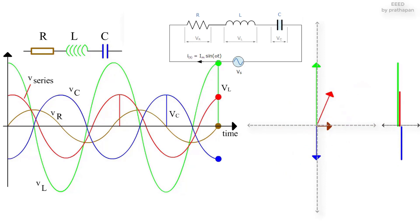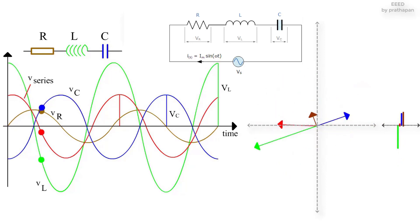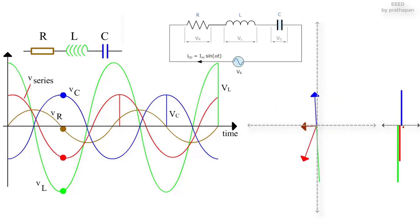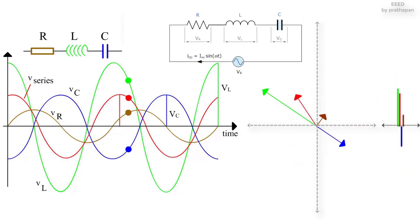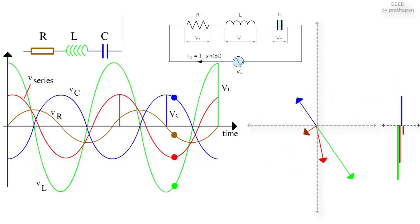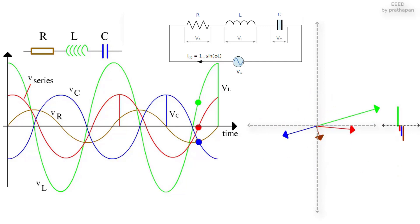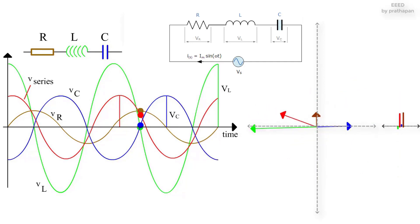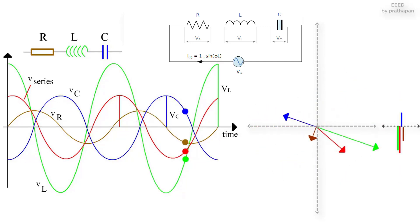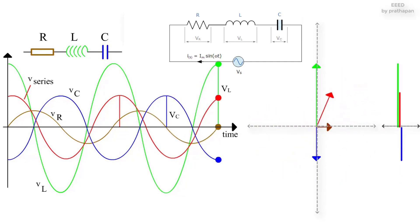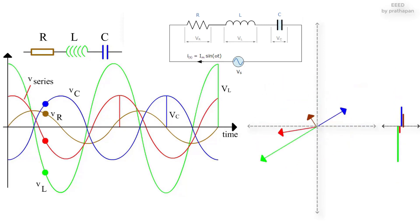This phase difference phi depends upon the reactive value of the components being used. Reactance X is zero if the circuit element is resistive, positive if the circuit element is inductive, and negative if it is capacitive, thus giving their resulting impedances.